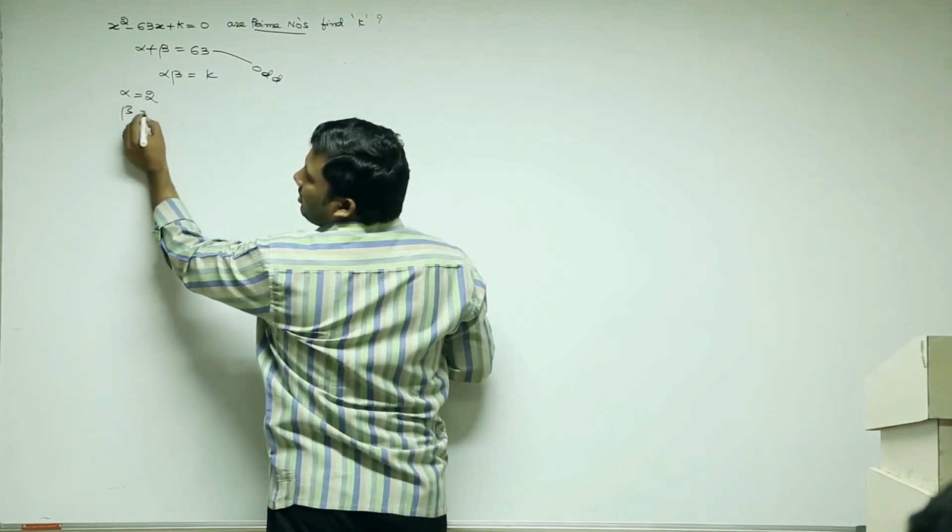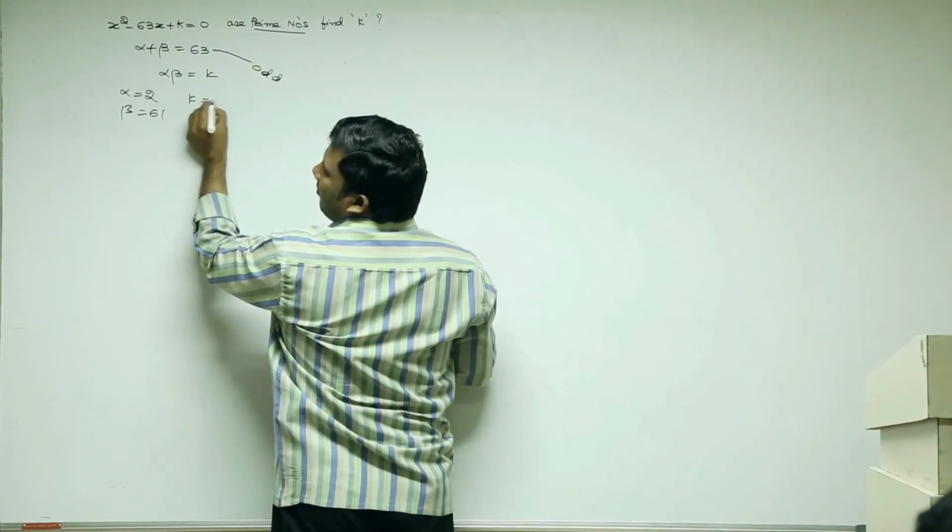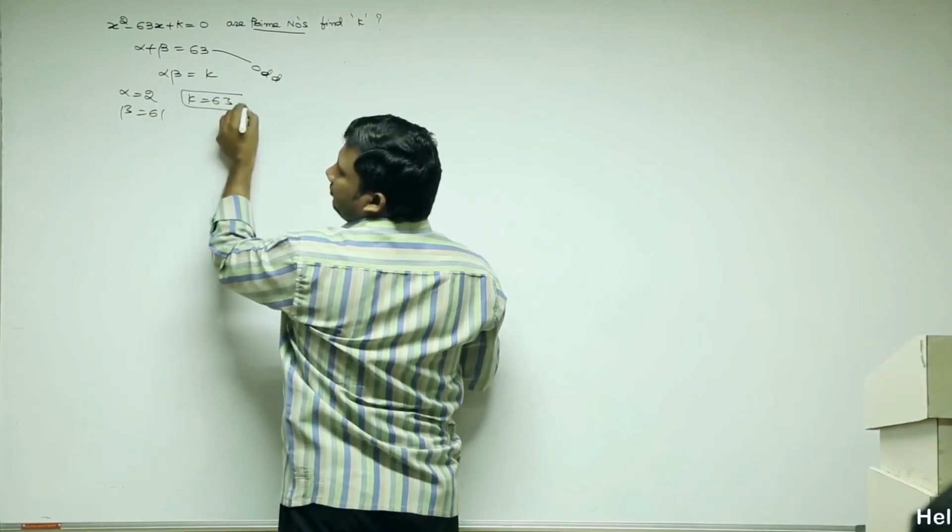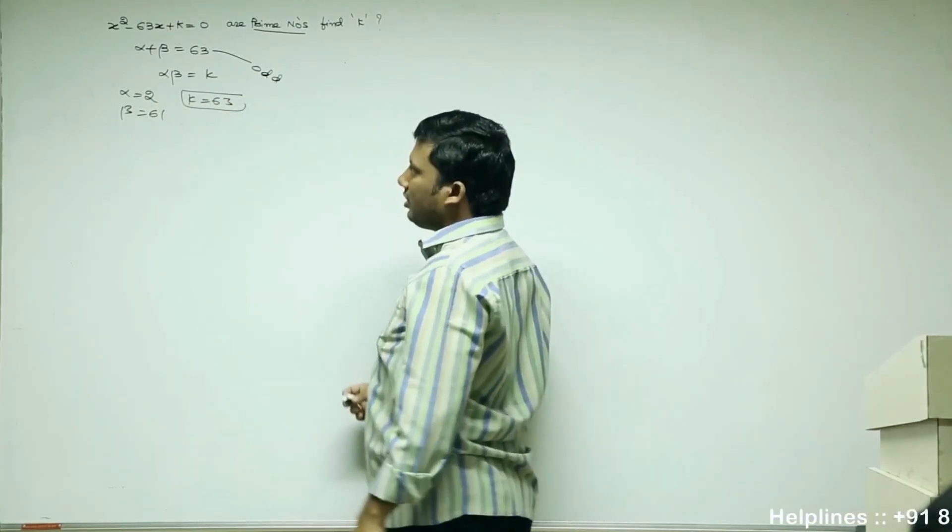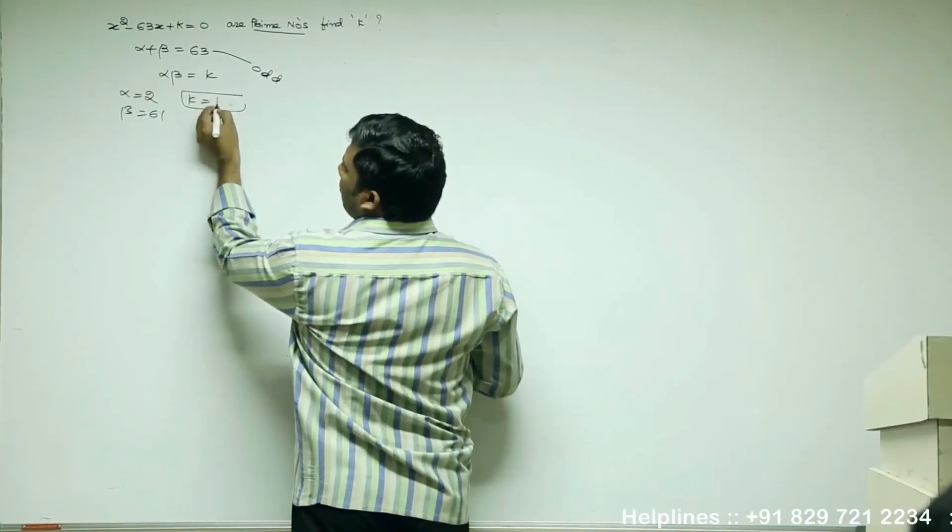Alpha is 2, beta is 61. K is nothing but 61 into 2, which is 122.